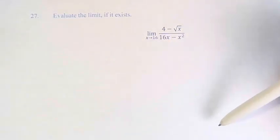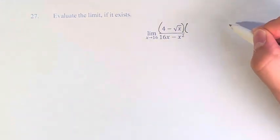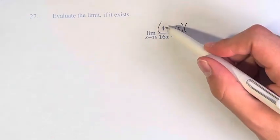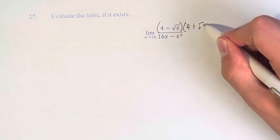So we can't just plug in 16 directly because we would be dividing by 0. So what we're going to do is rationalize the numerator. We have 4 minus the square root of x, so we're going to multiply it by 4 plus the square root of x.